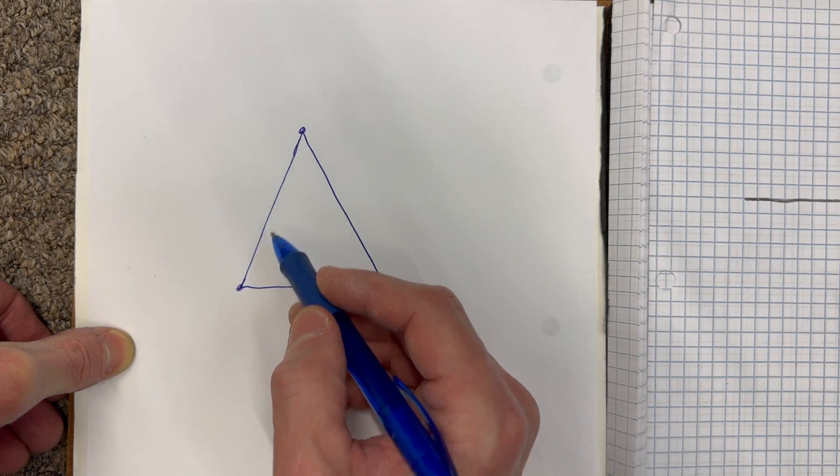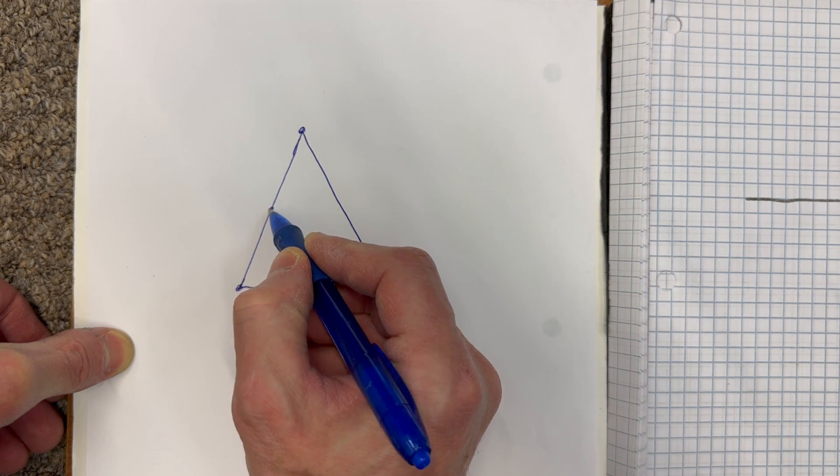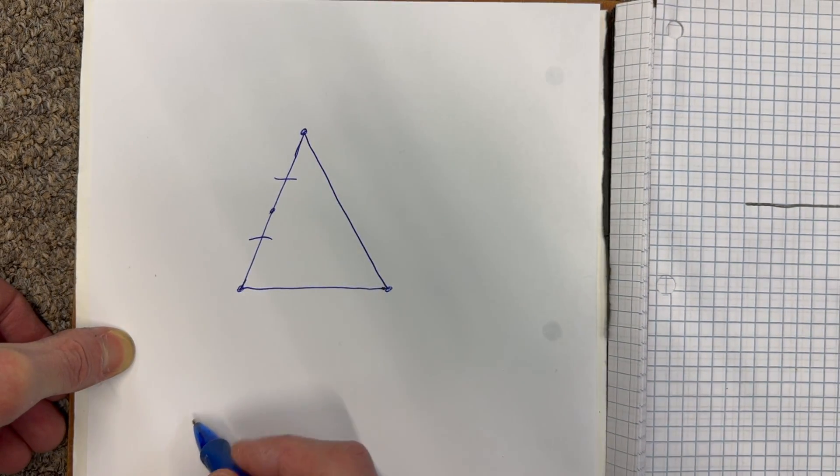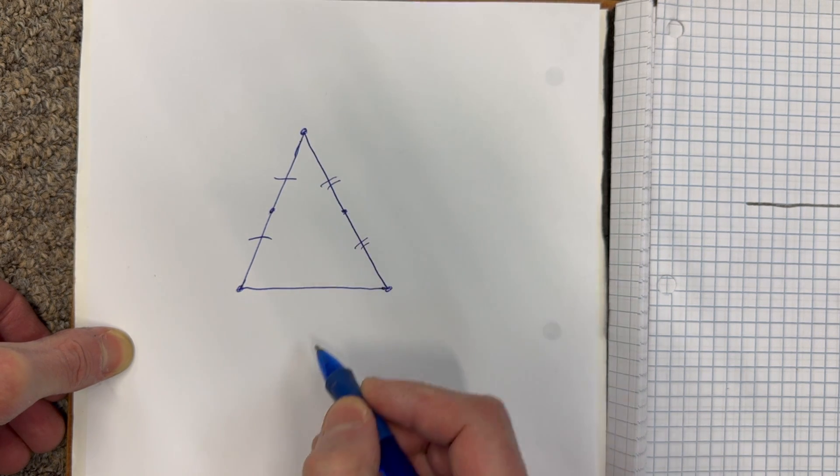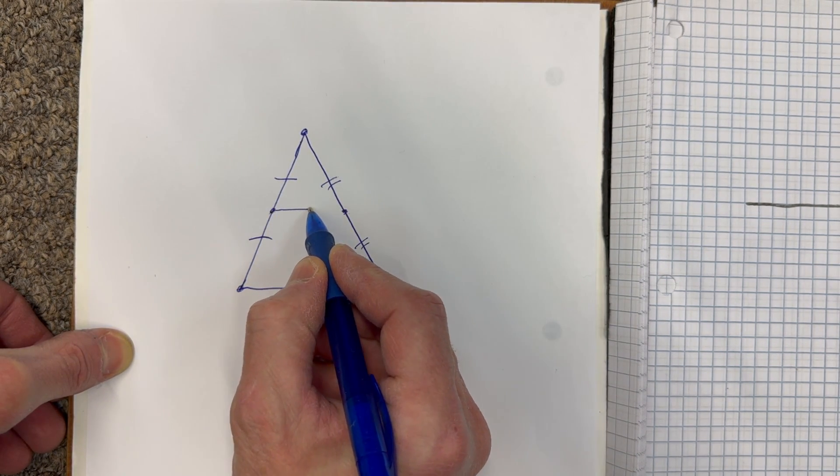So let's just take a triangle like this, for example. If we find the midpoint of this side so that these two are congruent, and we find the midpoint of this side so that these two segments are congruent, and we connect those two midpoints...